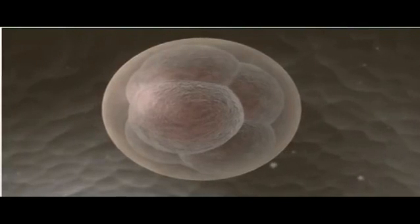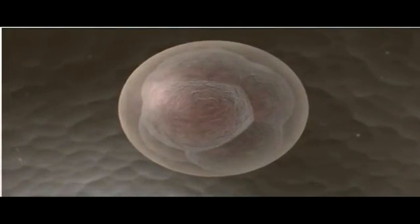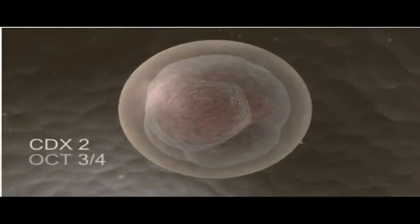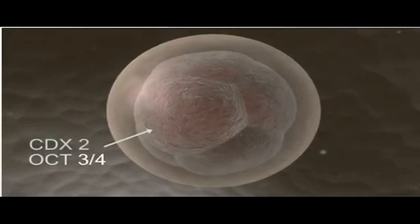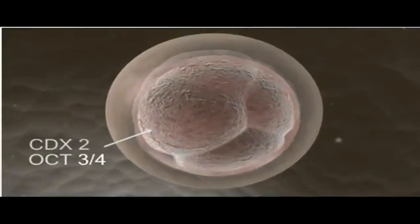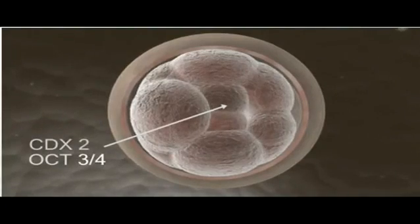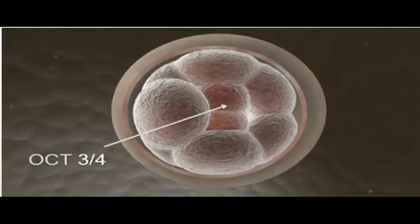In this eight-cell embryo, called a morula for its berry-like appearance, all cells express a pair of genes, CDX2 and OCT34. But as the cells of the morula go through their next round of division, CDX2 is downregulated in the innermost cells, while OCT34 remains expressed throughout.